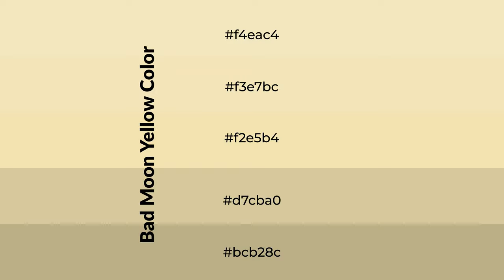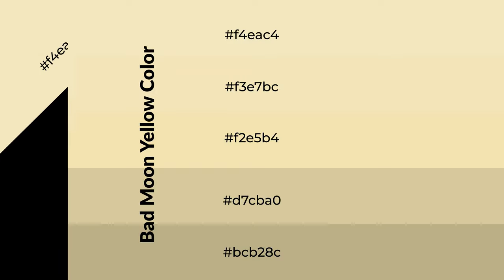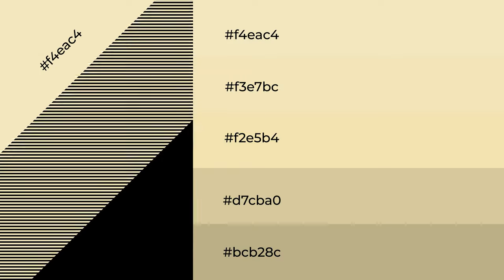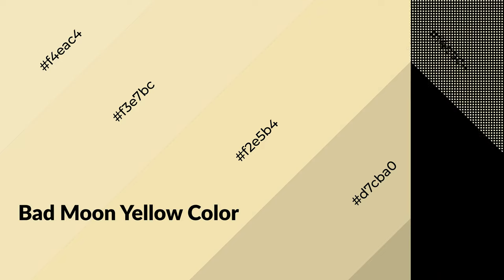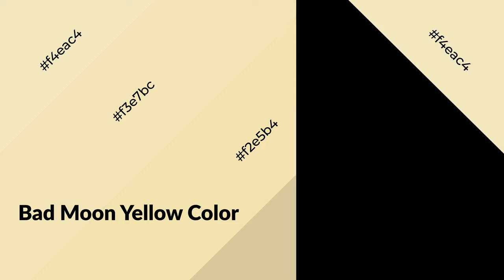To generate shades of a color, we add black to the color. Shades are used in patterns, 3D effects, and layers, and they create depth and drama. Bad moon yellow is a warm color and it emits cozier and active emotions. Warm colors are symbols of warmth.